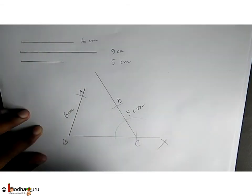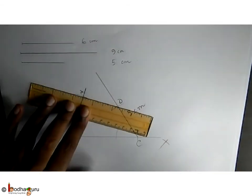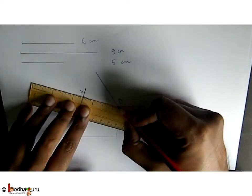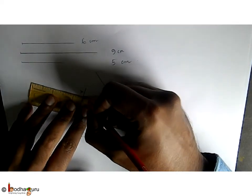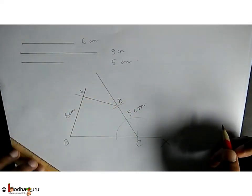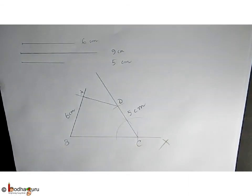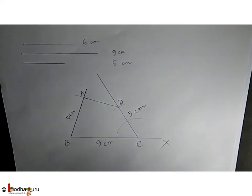Now we join A and D to complete the quadrilateral. So this is the quadrilateral ABCD where AB is equal to 6 cm, BC is equal to 9 cm, CD is equal to 5 cm and angle B is equal to 70 degrees and angle C is equal to 60 degrees.